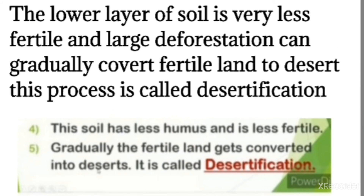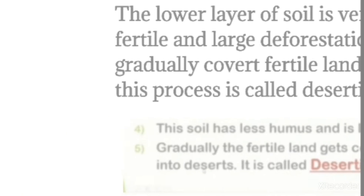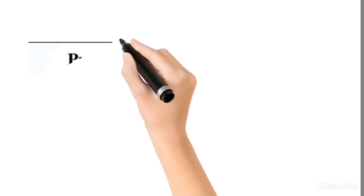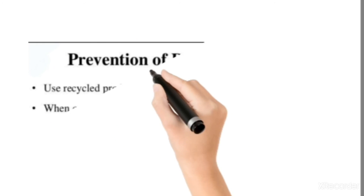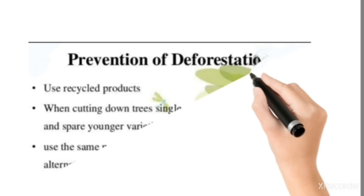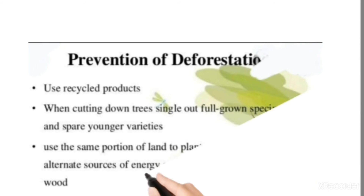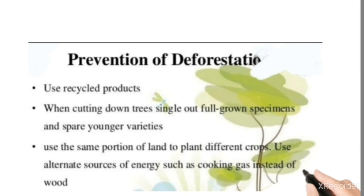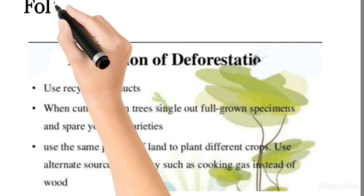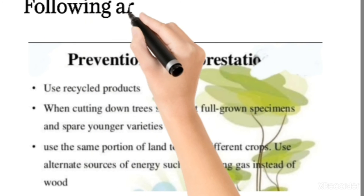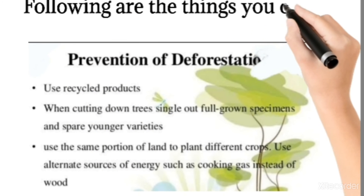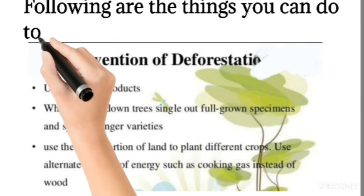We can do many things to prevent deforestation. Use recycled products, avoid cutting trees unnecessarily, and spare young trees. Use the same portion of land to plant different crops.